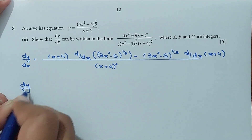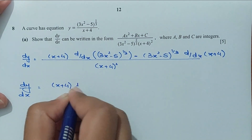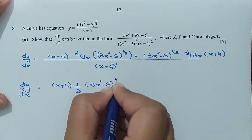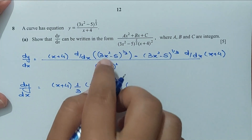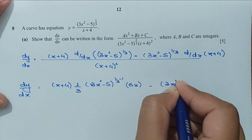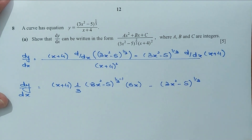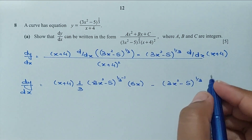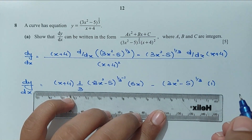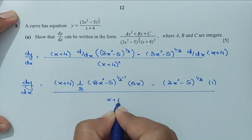So dy/dx: applying the power rule, the base is (3x² − 5) and the power is 1/3 minus 1. The derivative of the base function is 6x, and minus (3x² − 5) to the 1/3, and its derivative is just 1. The derivative of (x + 4) is 1. This whole thing is divided by (x + 4) whole square.